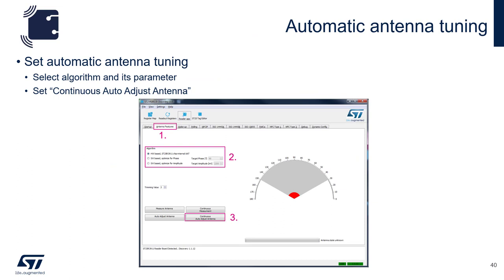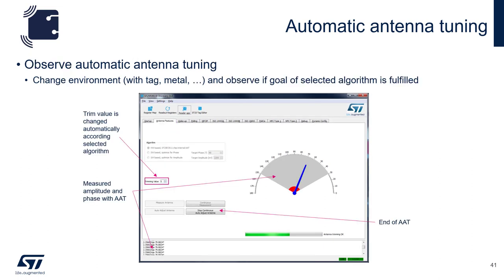You can simply change the trimming values of your AAT to try to normalize that measurement. To demonstrate the automatic antenna tuning, go to antenna features and select an algorithm — either the hardware-based or one of the two software-based. If you choose the software-based, please put in a target phase or target amplitude. From there, simply hit continuous auto-adjust antenna. To observe the automatic antenna tuning, place a piece of metal in the field. You will see the trim value change as the metal affects the antenna, and the phase and amplitude measurements change.